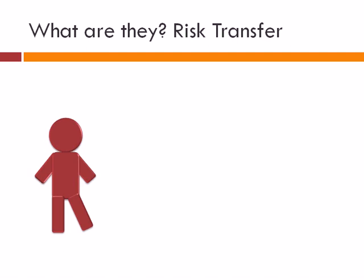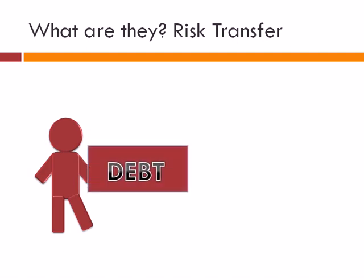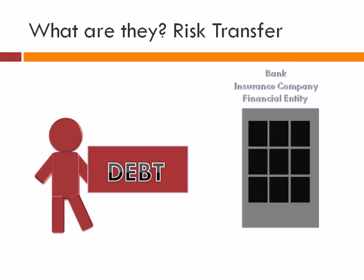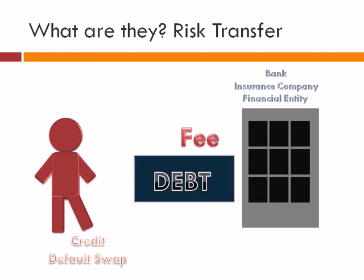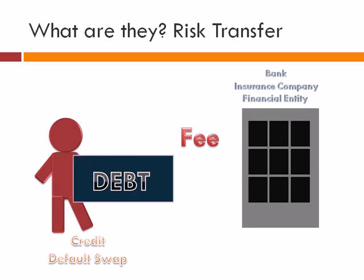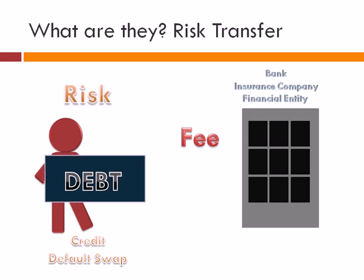What's a credit default swap? Simply put, it's a risk transfer. Let's say a person buys debt and they want to make sure that debt is secure. They go to an outside party — a bank or insurance company — and pay a fee to the financial entity to issue a credit default swap. If something happens and the debt cannot be paid, the financial entity is responsible for covering that lost debt, basically transferring the risk from the person who purchases the debt to the company that issues the credit default swap.